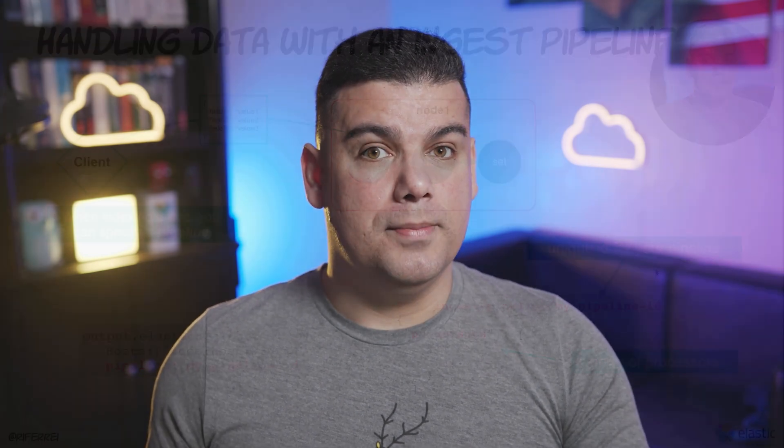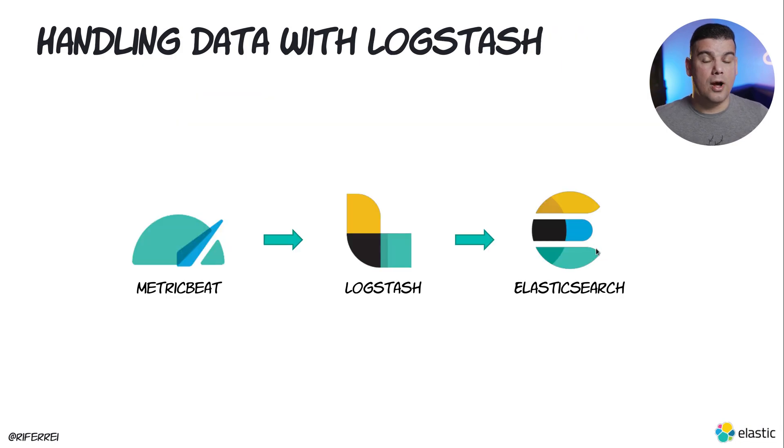The drawback of using an ingest pipeline is that now you are going to transmit all the data from the edge — in other words, where MetricBeat is being executed — across the network, and the actual post-processing will occur on Elasticsearch. That means the traffic will probably increase, sometimes unnecessarily. A way to overcome this limitation is to use the third option, which is using Logstash.